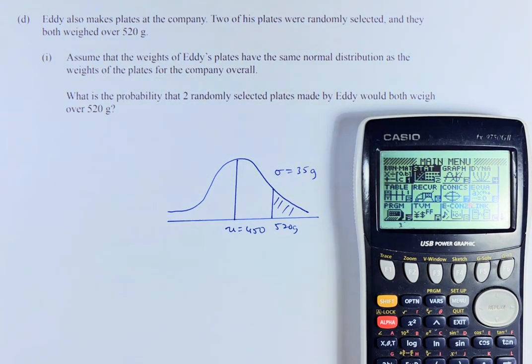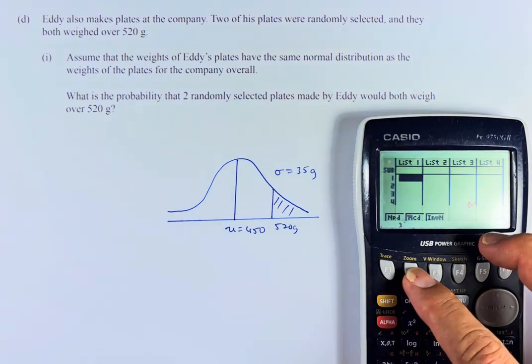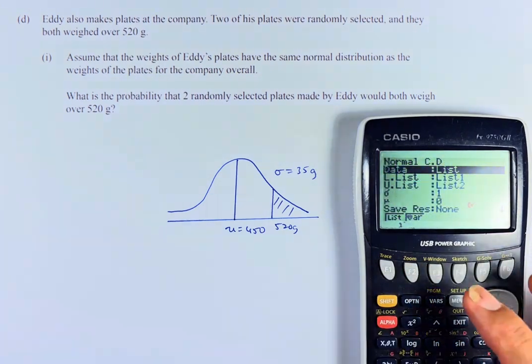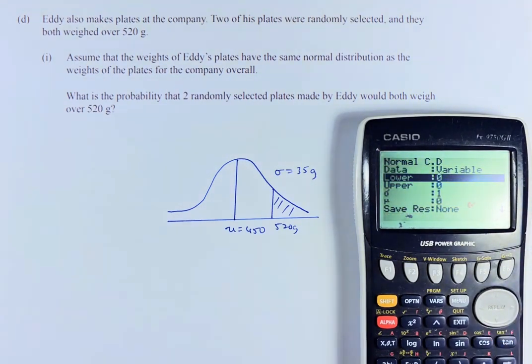So what we're going to do is go to distribution, F5, then normal distribution, F1, and again, it will be NCD. Normal distribution to calculate a probability is always NCD. Now we need to change to variable. Now we need to key in the data. Lower is where it starts. It starts at 520, so it's going to be 520.